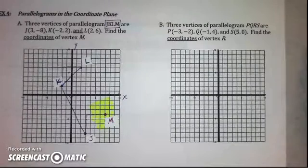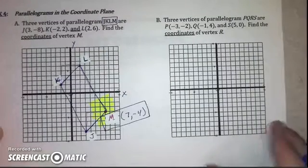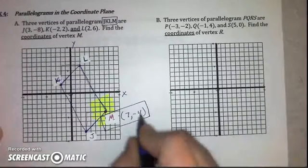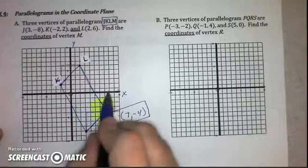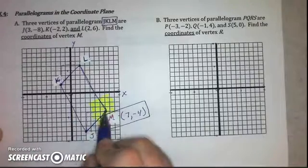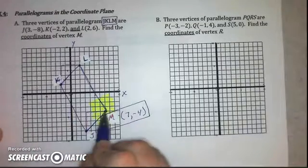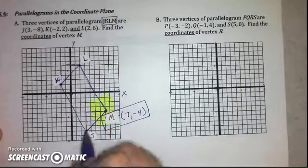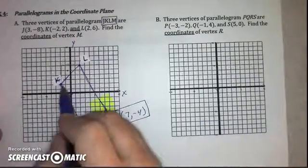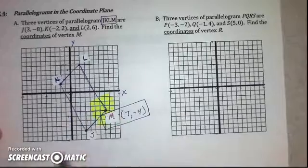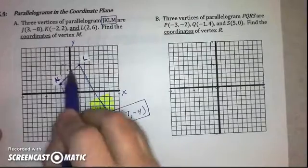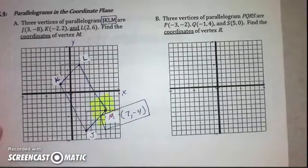So we get the coordinates for point M: (7, negative 4). You find that by counting the rise over run to match the slope of the opposite side.